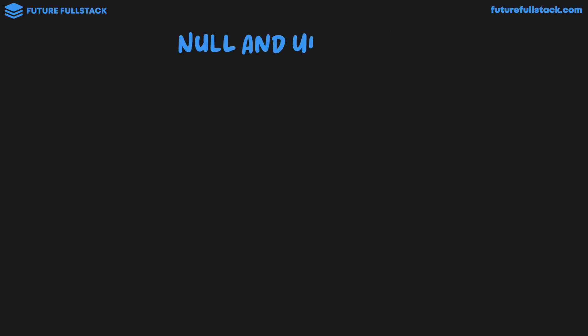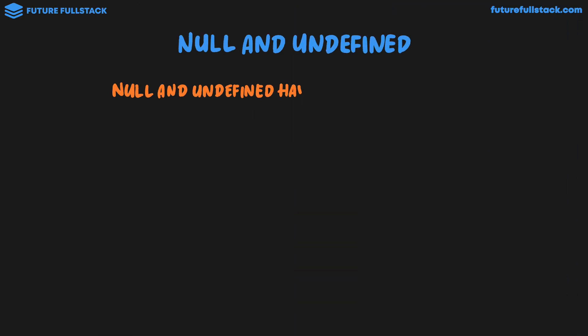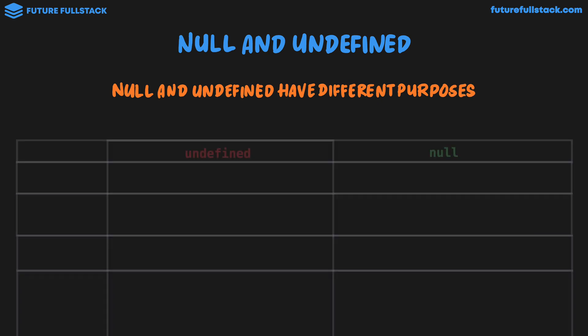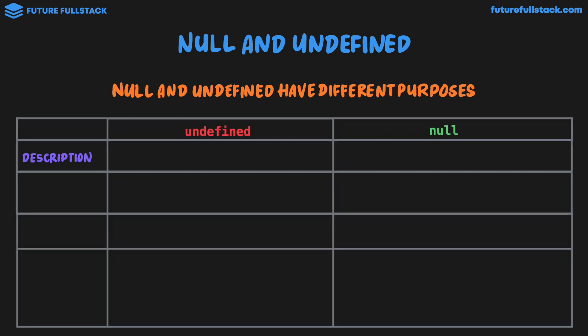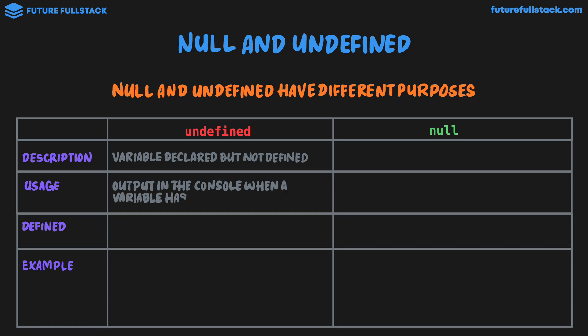So let's take a look at null and undefined in more detail — null and undefined have different purposes. We get undefined when we have a variable declared but not defined. The usage of undefined is its output in the console when a variable has no assigned value. It happens automatically if a variable has no value assigned — it's not like we're giving a variable an undefined value. What's happening is we're trying to access the value of a variable and we're getting back that it's undefined.